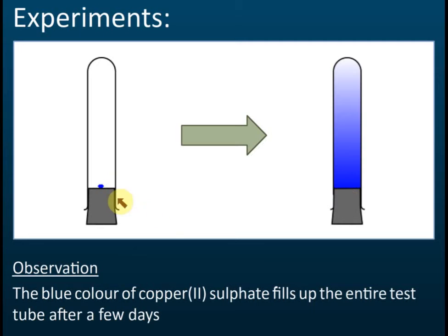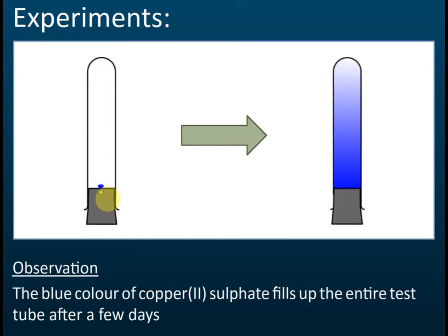After a few days, we found that the blue color of the copper sulfate — which initially was just a piece of crystal — spread to almost the whole gel. This is something very strange, because we know that on the surface of the earth we have gravitational pull. If we have gravitational pull, then the blue color should go down, but it shouldn't go up. But the fact is that this blue color does go up and spreads through the whole gel.